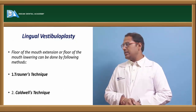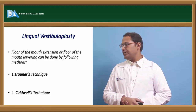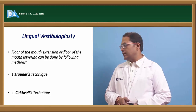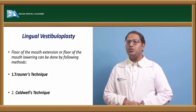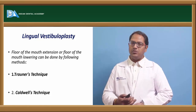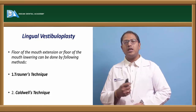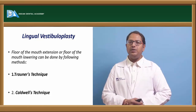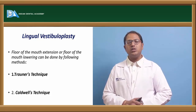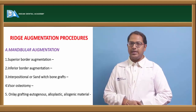For lingual vestibuloplasty, the technique given by Caldwell is used most commonly today, with an older technique being Trauner's technique. In this procedure, the floor of the mouth is addressed — we increase the level of the floor of the mouth. In cases where the lateral throat form is of Class 3 type and is very highly placed, we need to bring it down if there is no space for placement of the denture.